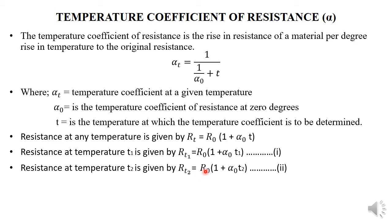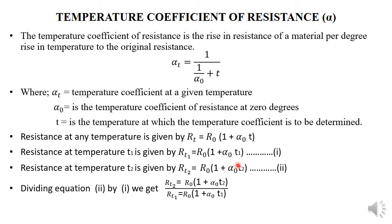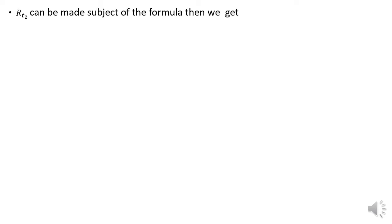With these two equations, when you divide equation two by equation one, R_0 and R_0 cancel out, giving a simplified equation. Making R_t2 the subject of the formula, the equation reduces so that R_t2 is simply given by R_t1 times one plus alpha_1 times the difference in the temperatures.